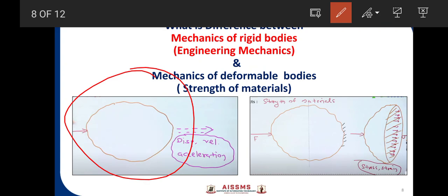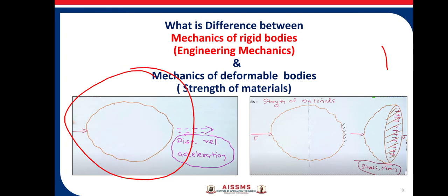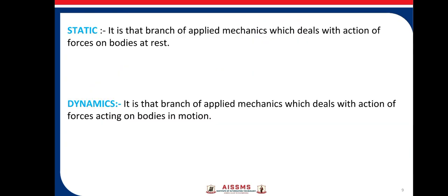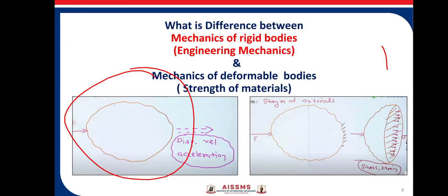The study of these external effects due to the application of force is called engineering mechanics — that is, engineering mechanics deals with the external effects of forces. Whereas in strength of material, we are concerned with internal effects.